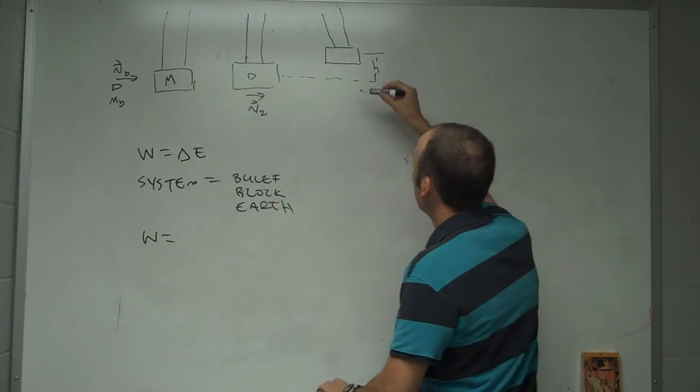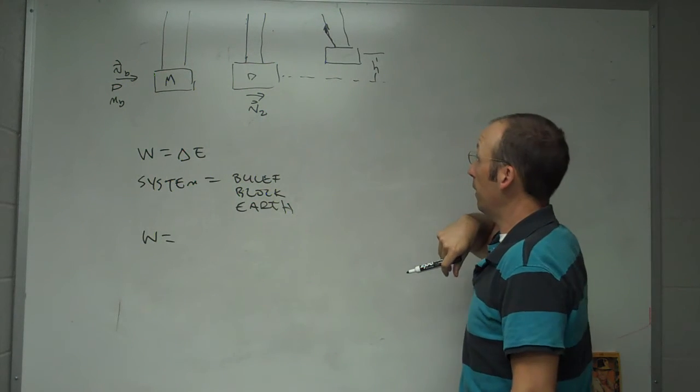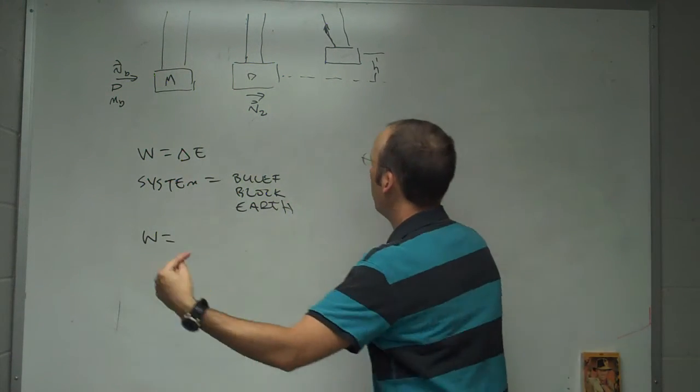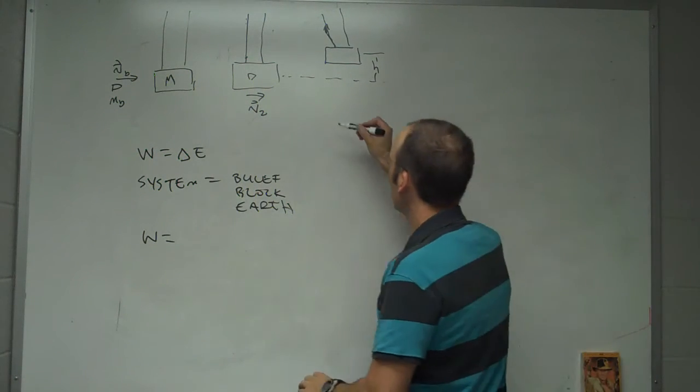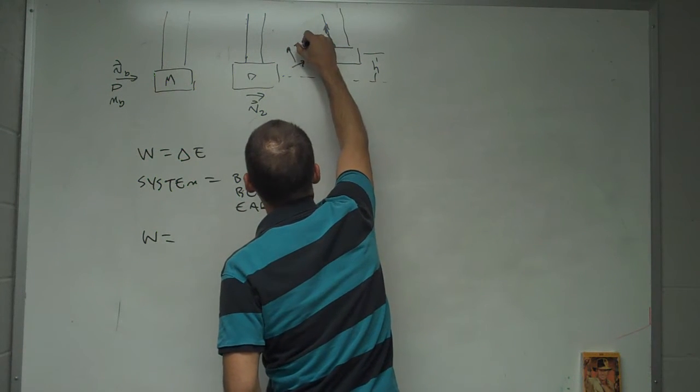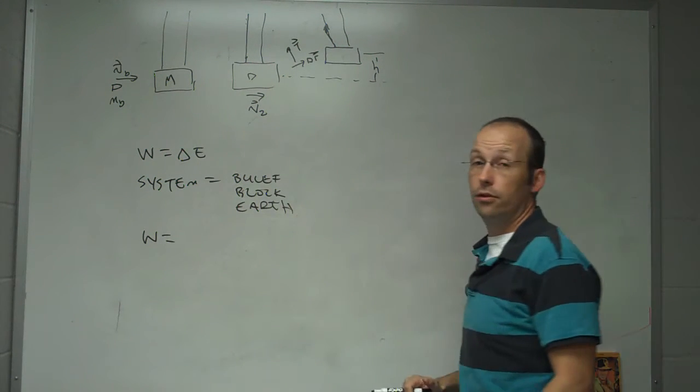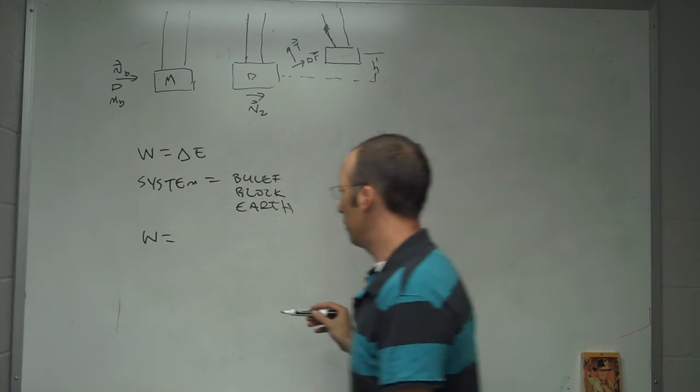What about the strings? They're pulling on it this way. They do work. And the answer there is no. Because as the block's moving, the strings pull perpendicular to the direction it's moving. So right here, there's delta R and there's T, the tension. And so T dot delta R is going to be zero. So they don't do any work. So the work done is zero.